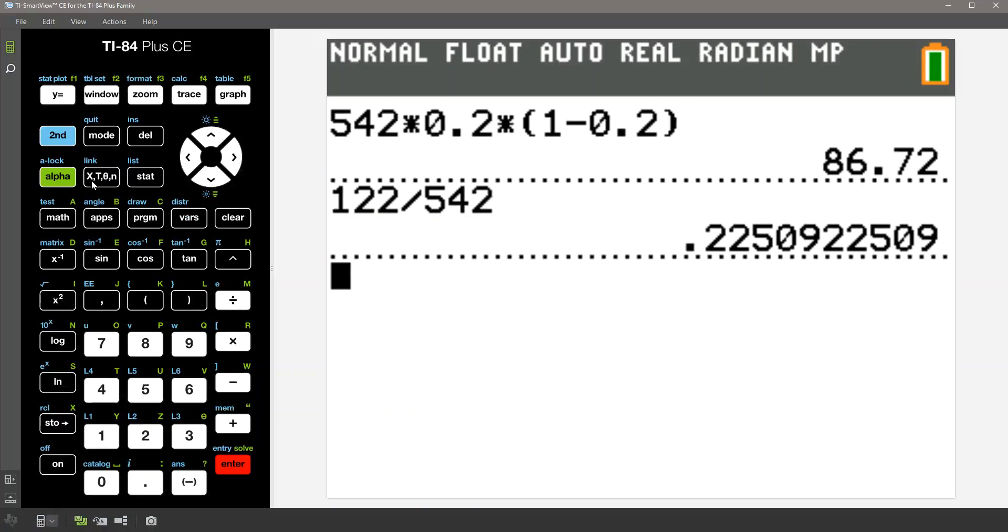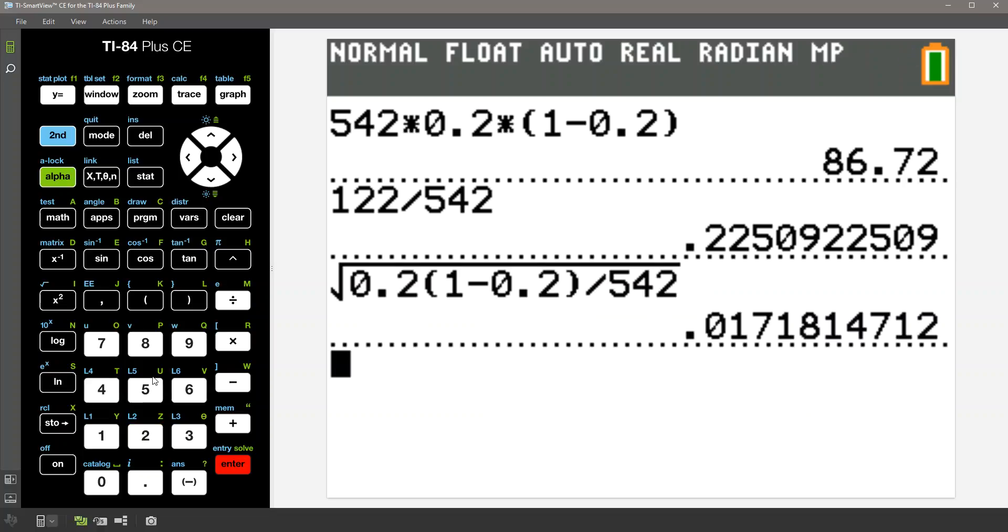So let me go grab the calculator. I'm going to hit second square root. And then I want P0, which is 0.2 times 1 minus P0, which is 1 minus 0.2. You don't need the times symbol in there. The parentheses will take care of the multiplication. I'm going to divide it by 542. And sure enough, I get 0.01718.